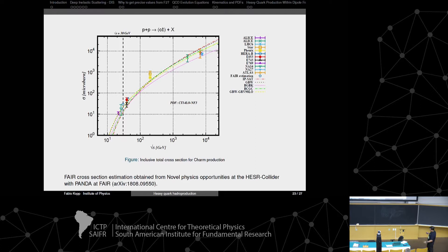Here is our estimation for FAIR, based on this article. As noted by one of the speakers, in the commissioning phase we will have PP collisions, so it will be possible to test these models. Here are results for the rapidity distribution at 30 GeV center-of-mass energy, comparing a modern PDF to an old PDF — in this case, not much difference.